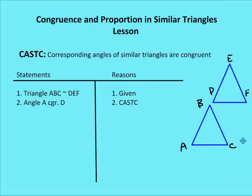The next acronym is CASTC: corresponding angles of similar triangles are congruent. If triangle ABC is similar to DEF, then by CASTC, angle A is congruent to angle D, angle B is congruent to angle E, and angle C is congruent to angle F.